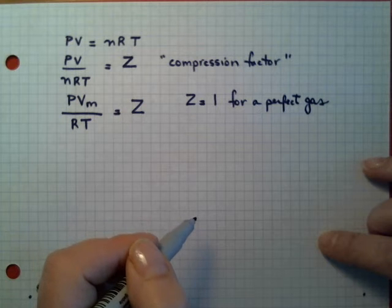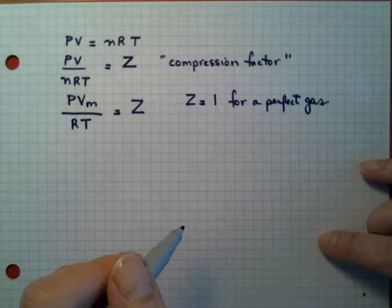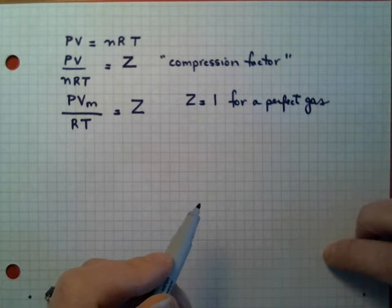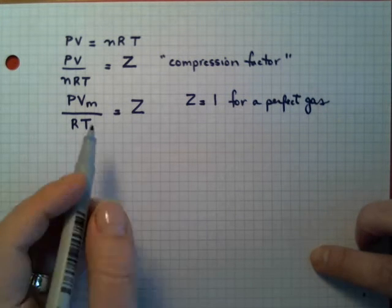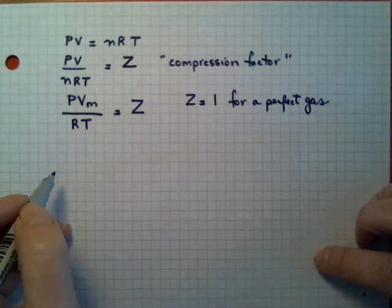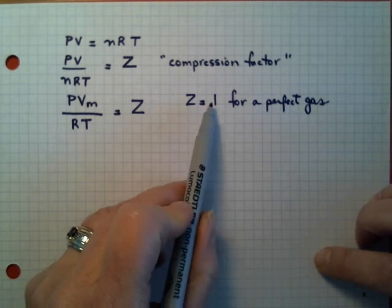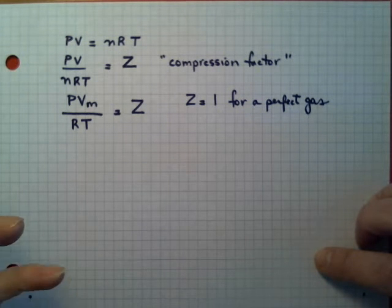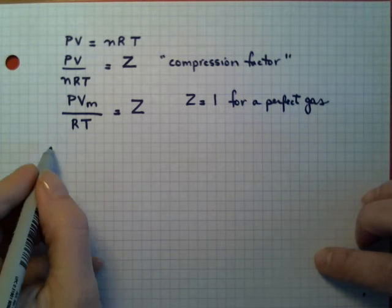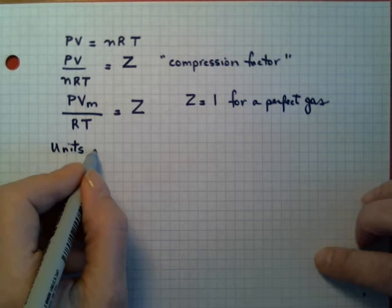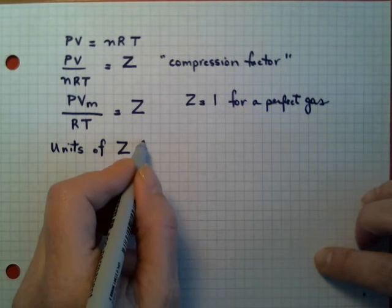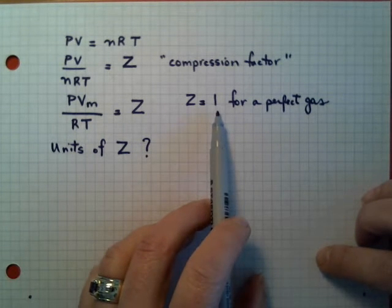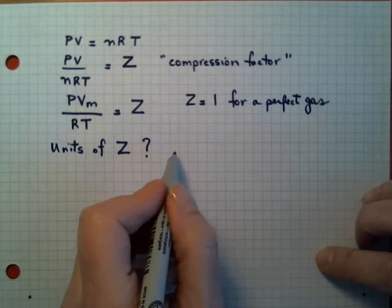Up until now, we may have heard about an ideal gas, but the terminology in the current textbook talks about a perfect gas. For a real gas, Z might not be equal to one. It could be a little bit greater or it could be a little less. What are the units of the compression factor Z? It actually is a unitless factor. No units.